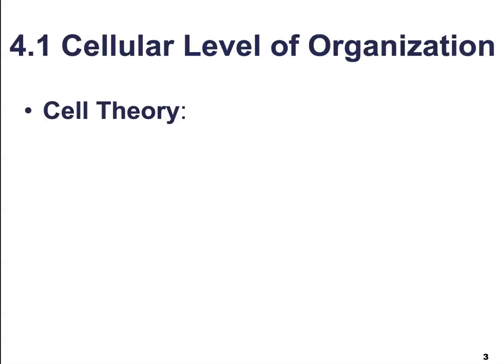First, we want to talk about an overview of the cellular level of organization. There was a detailed study of the cell in the 1830s, and this is where we got a unifying concept in biology that originated from the work of biologists Schleiden and Schwann in 1838 and 1839. What they came up with was what we now refer to as cell theory.